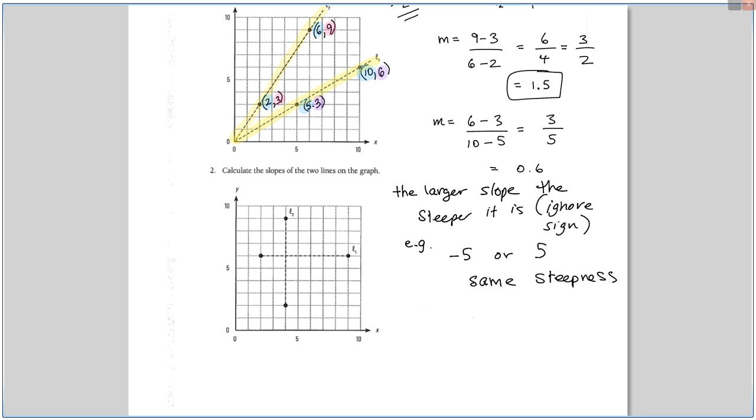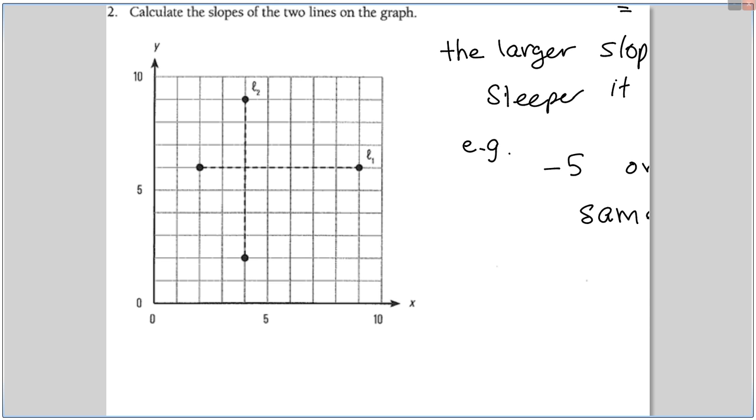So the larger the number, the steeper it is. And you ignore the sign. So example. Which one's steeper? Minus 5 or 5? Which one's steeper? You ignore the sign. Because the sign is just direction. The same. They have the same steepness. It's a trick question. So ignore the sign. It would be the exact same steepness, just different direction. Now let's take a look at the next two. Let's start with the horizontal one. Remember from slope dude, what's the slope of a horizontal line? This is zero fun. Yeah. This is zero fun. So why is it zero? Let's take a look at the points.